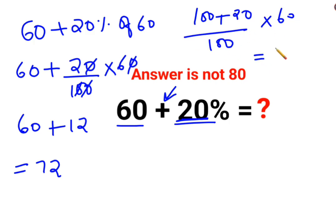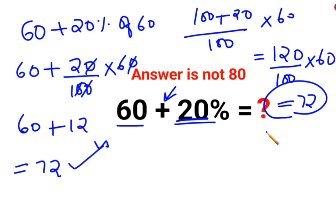So basically we did 120 upon 100 into 60. With this logic I got it as 72 as well. So both methods are absolutely right.